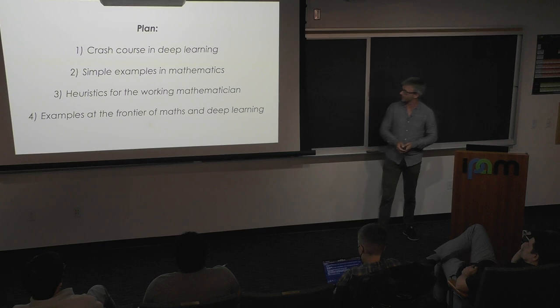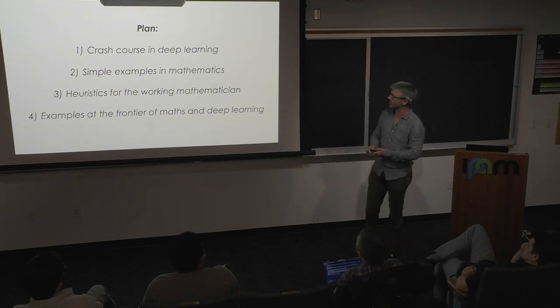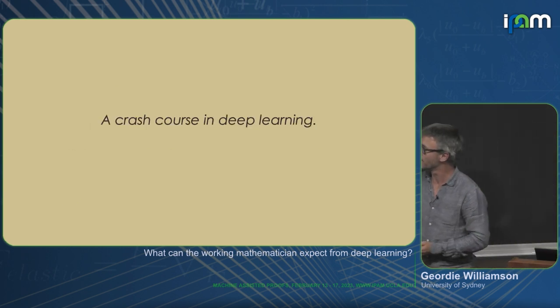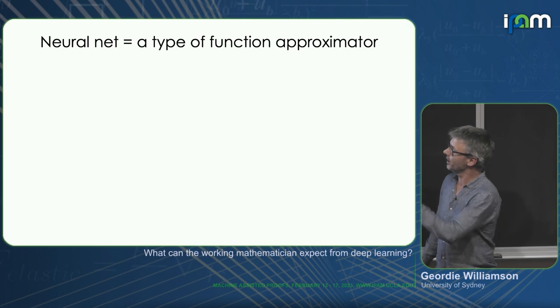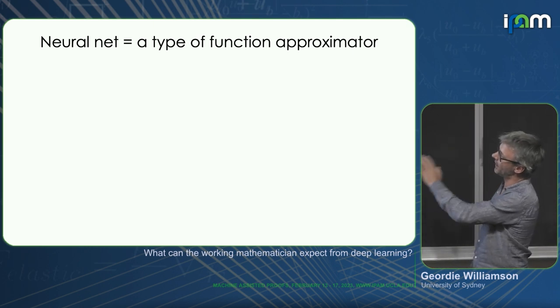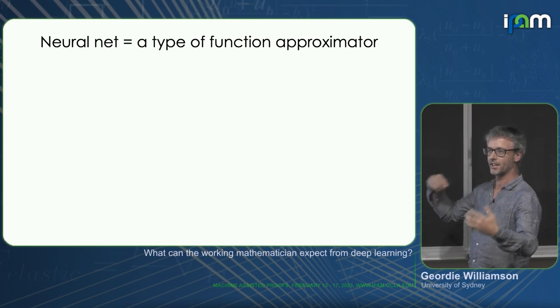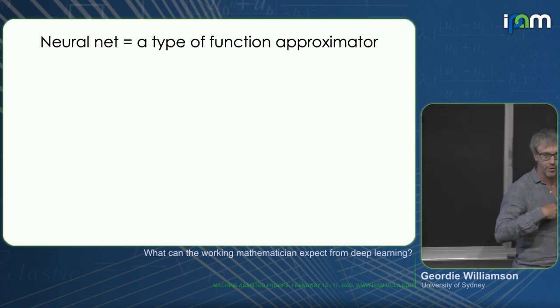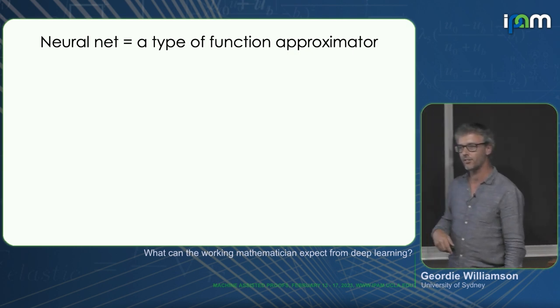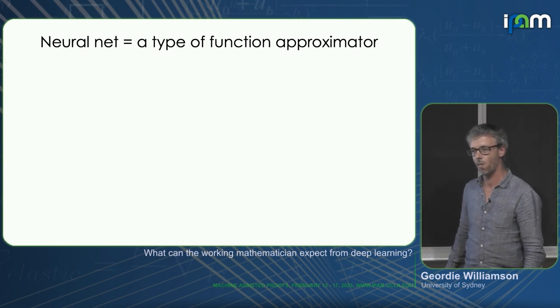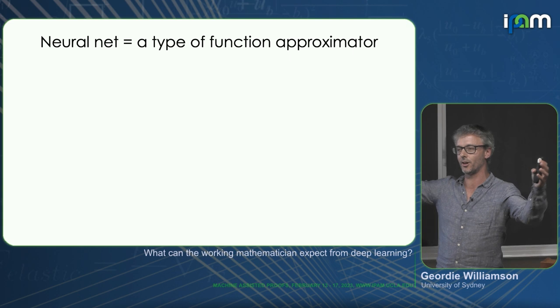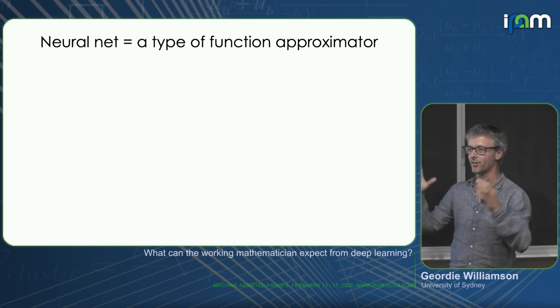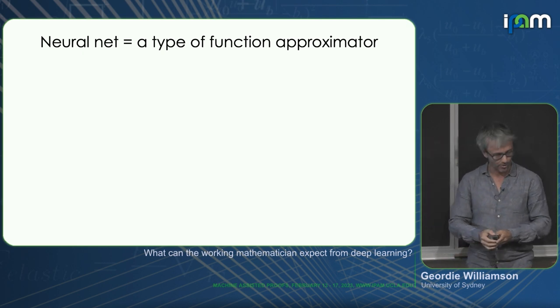So what is deep learning? A neural net in this talk is just a type of function approximator. We're thinking about a function on a big vector space and we would like to approximate it. Of course mathematicians have been trying to do this for hundreds of years and this is a particular way of doing this. Neural net has now grown to encompass many things, but I just want to use it as a type of function approximator.